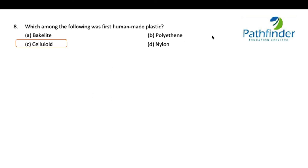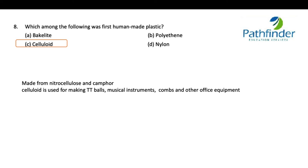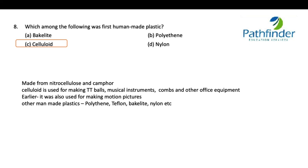Next question: which of the following was the first human-made plastic? The correct answer is celluloid. Although all four options are forms of plastic, celluloid was the first, made from nitrocellulose and camphor. Celluloid is used for making table tennis balls, musical instruments, combs, and other office equipment. Earlier it was also used for making motion pictures. Other man-made plastics include polythene, Teflon, Bakelite, and nylon.